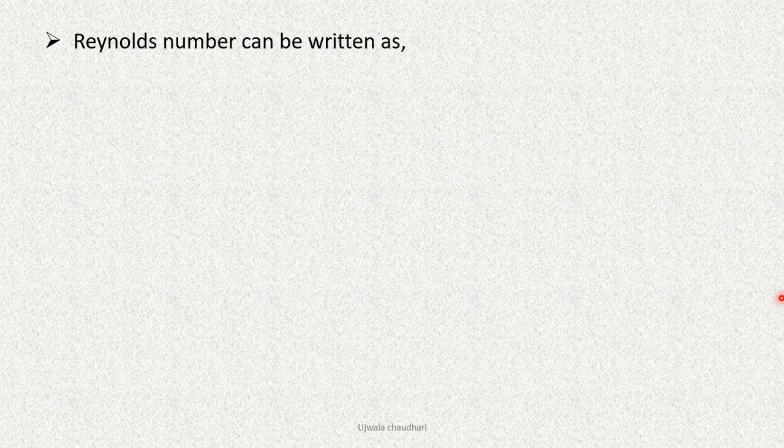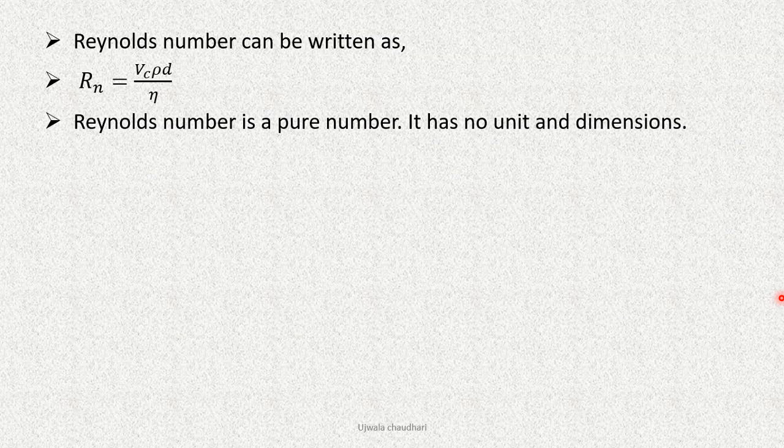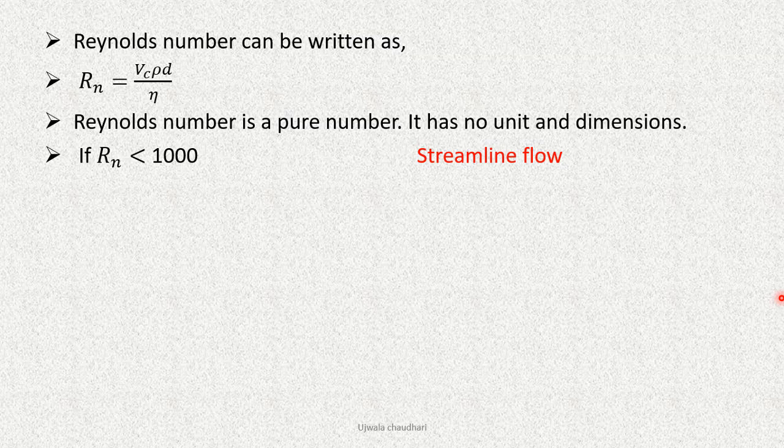Reynolds number can be written as Rn = vc·ρ·d/η. Reynolds number is a pure number - it has no unit and dimension. If Rn < 1000, that is streamline flow. If Rn > 2000, then turbulent flow. Rn between 1000 to 2000, that is unsteady flow.